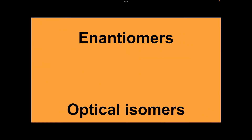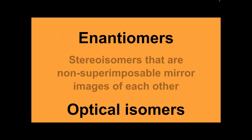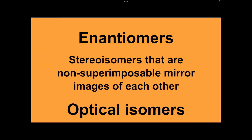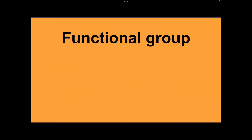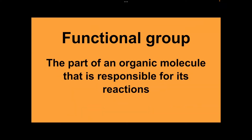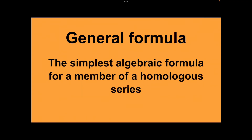Enantiomers, or optical isomers: stereoisomers that are non-superimposable mirror images of each other. Functional group: the part of an organic molecule that is responsible for its reactions. General formula: the simplest algebraic formula for a member of a homologous series.